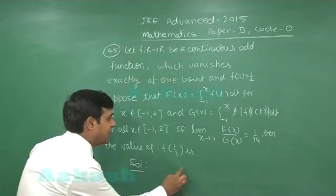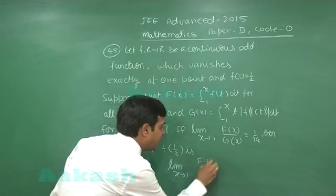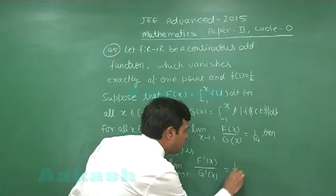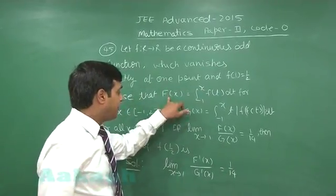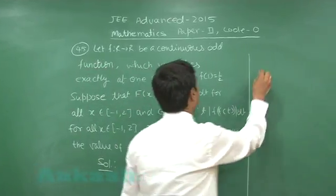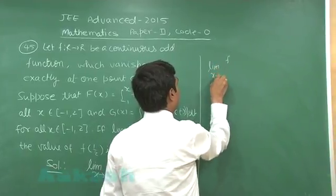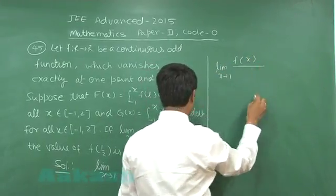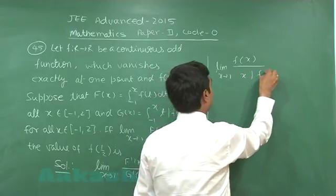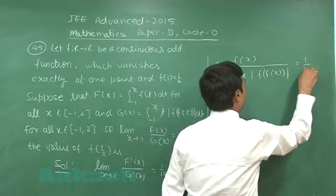So, applying L'Hôpital to this question, we get limit x approaching to 1 f dash x by g dash x is equal to 1 by 14. Find f dash x and g dash x and substitute it here. We find limit x approaching to 1 f x divided by x mod f of f x is equal to 1 by 14.